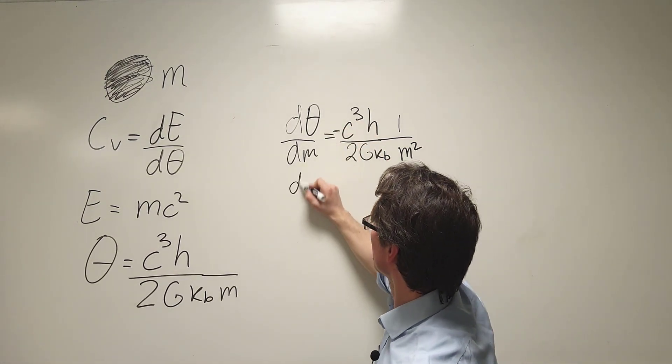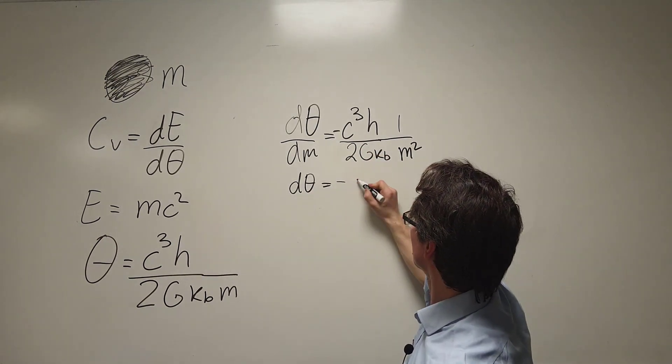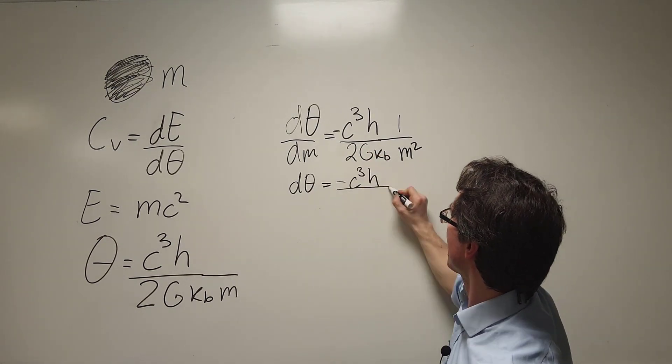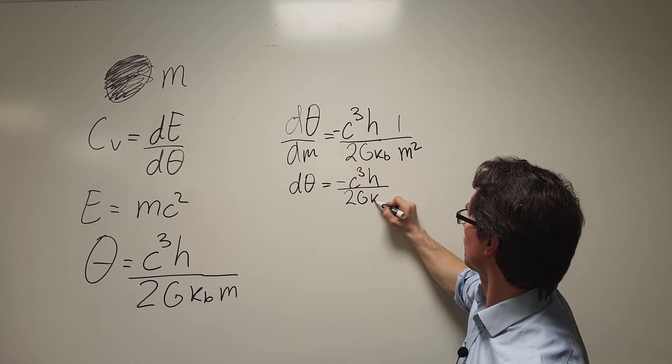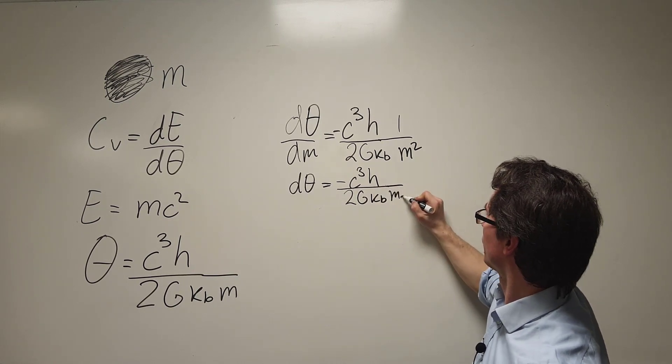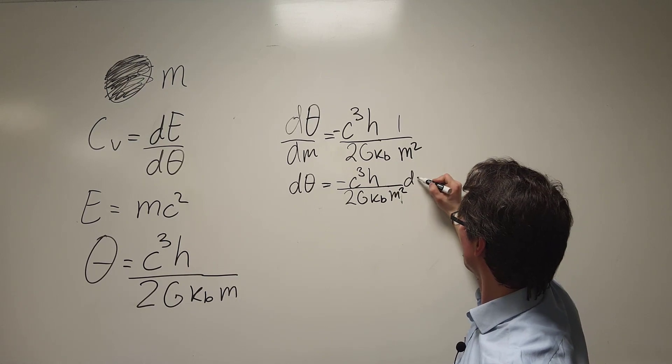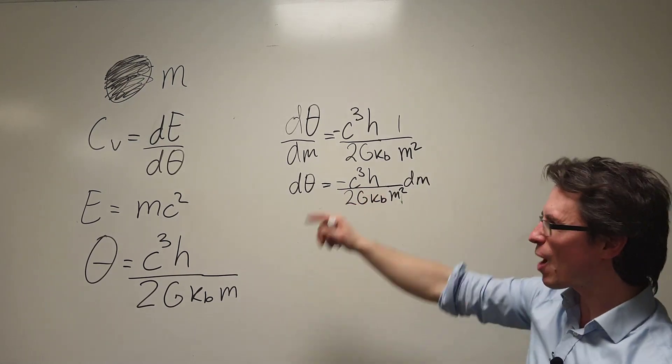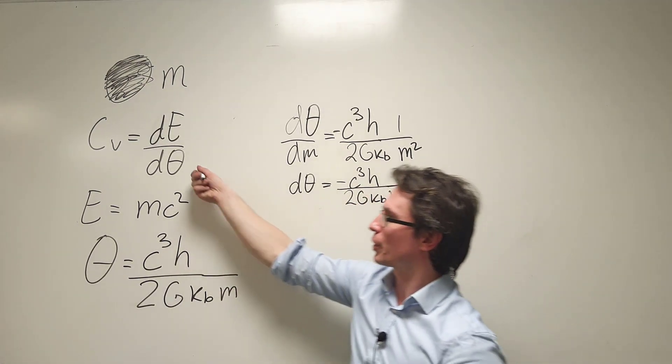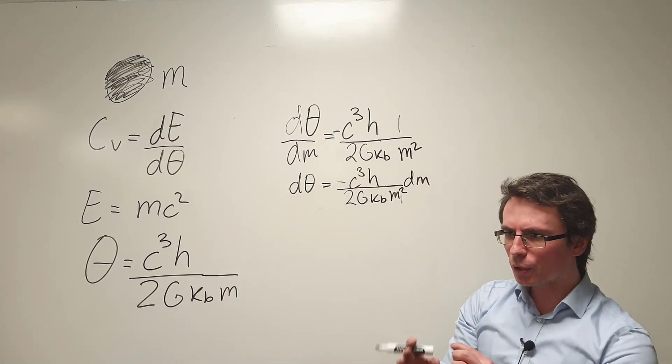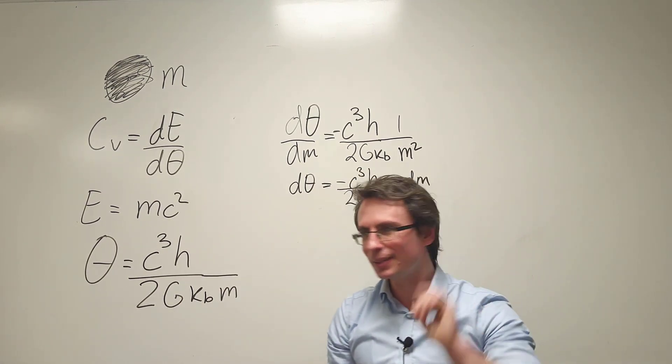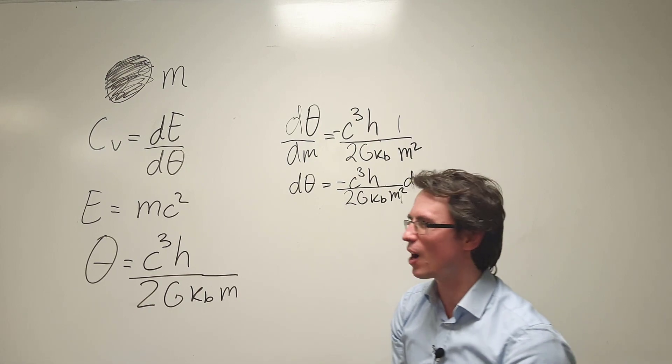Just rearranging that for d theta, this will be equal to minus c cubed h over 2 g k b m squared multiplied by dm. Okay now we have our d theta which can go over here. All we need to do is find our little dE, that tiny amount of energy.